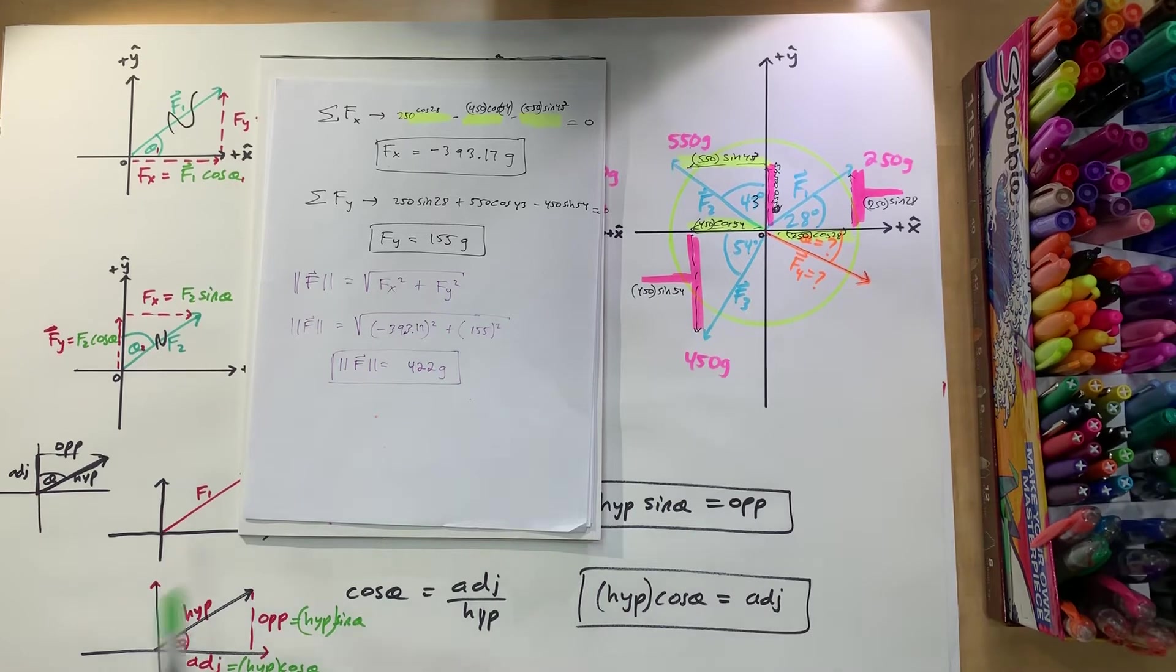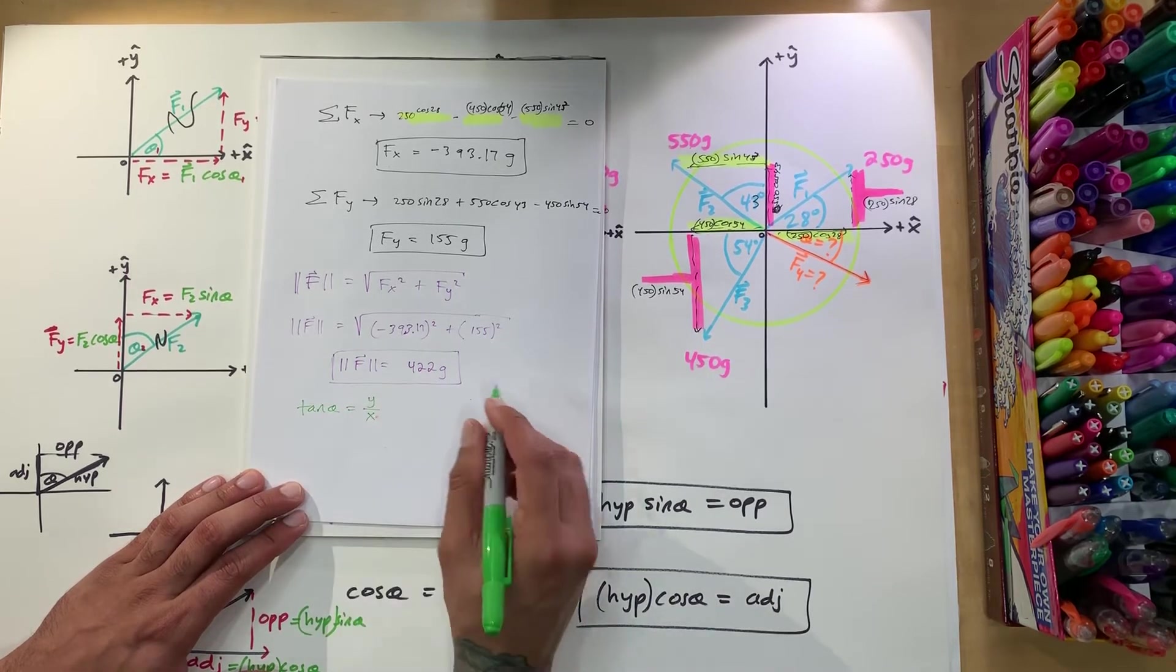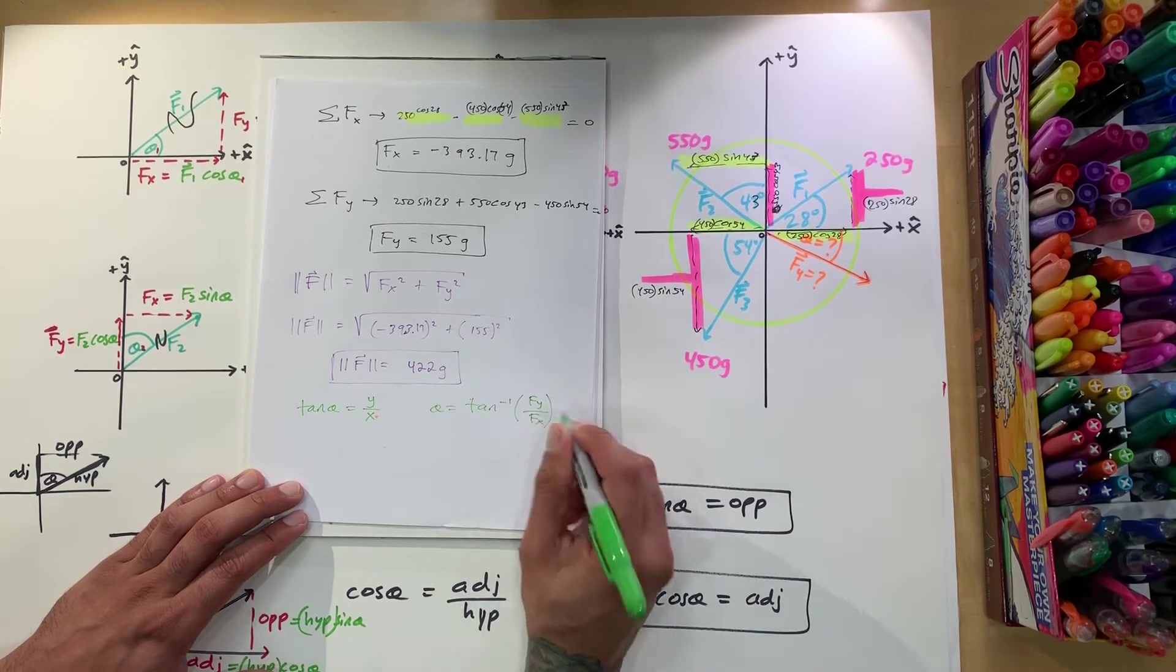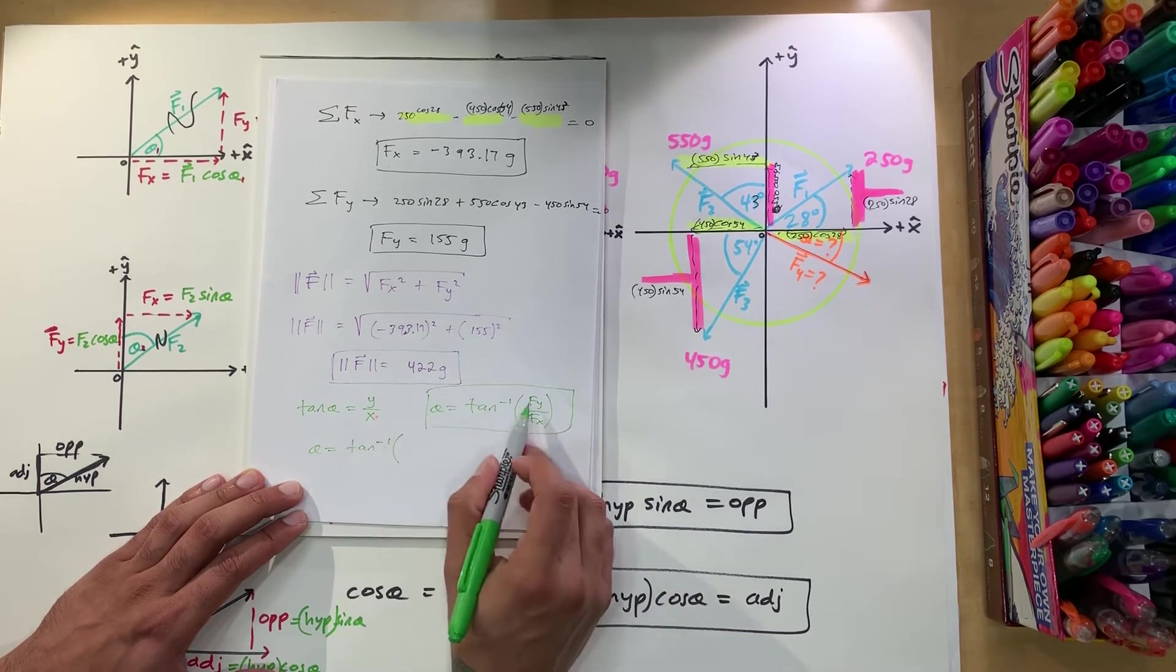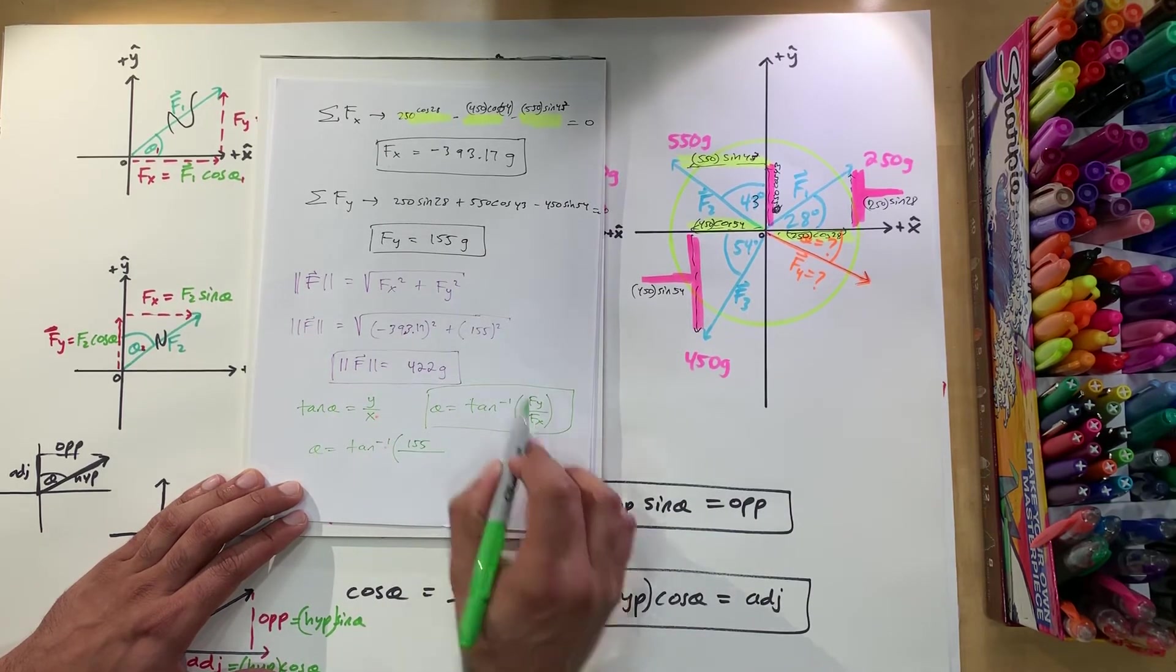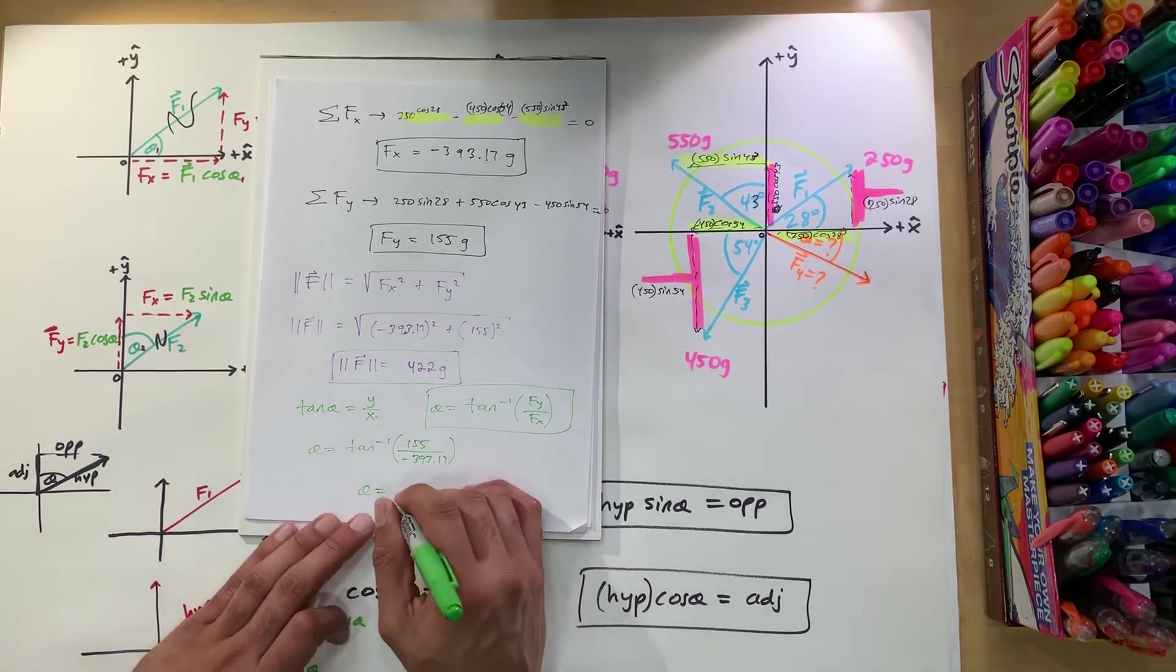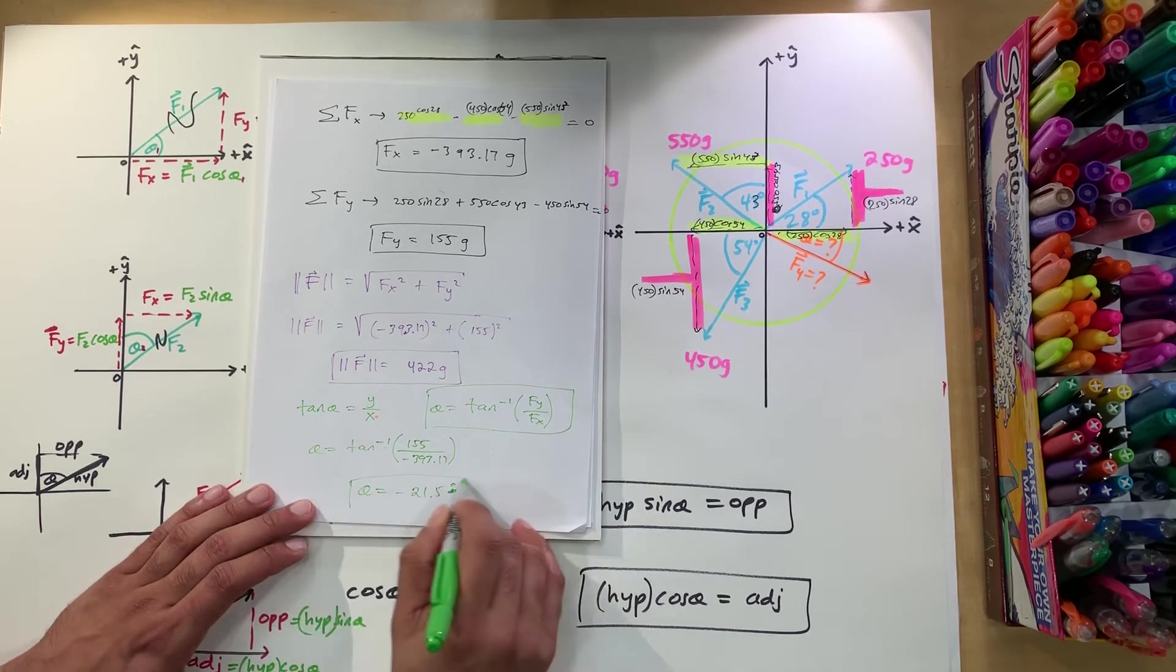And so now the final part is the angle. So we're going to use tangent theta is equal to y over x. Alright, we're going to solve for theta. So we got theta is equal to tangent inverse. Instead of y, we're going to write Fy. Instead of x, we're going to write Fx. Okay, so we're going to use this. So we have theta is equal to inverse tangent of Fy, which is 155 grams. And then we got Fx, which is negative, so negative 393.17 grams. Okay, put this in the calculator, and we're going to get an angle of negative 21.5 degrees. This should be degrees up here. Okay, so negative 21.5.